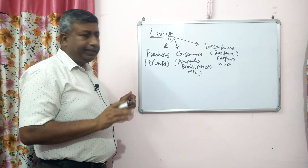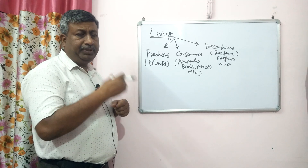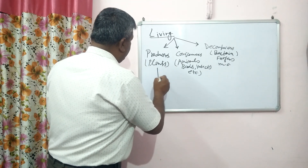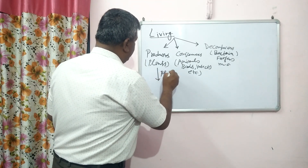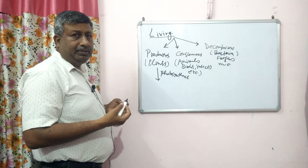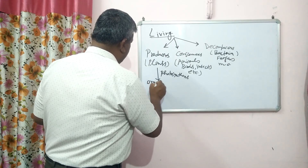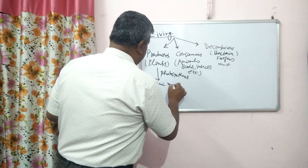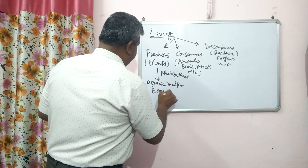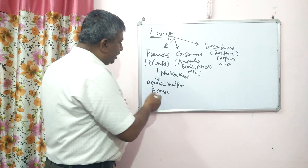Plants are the primary producers — they produce the biomass. They produce organic matter by the process of photosynthesis. CO2 and carbohydrates are converted to organic matter. In simple terms, they produce the biomass such as leaves, stems, etc., which are photosynthetic products.